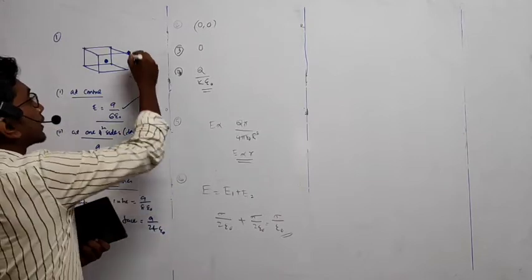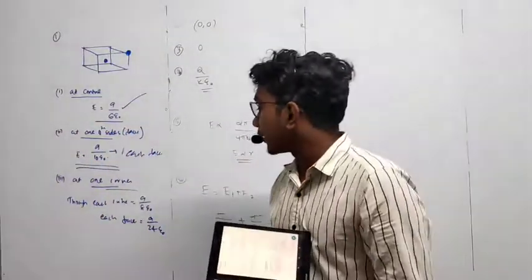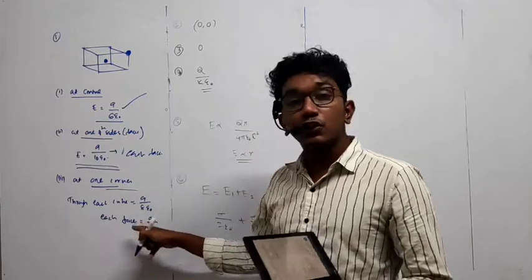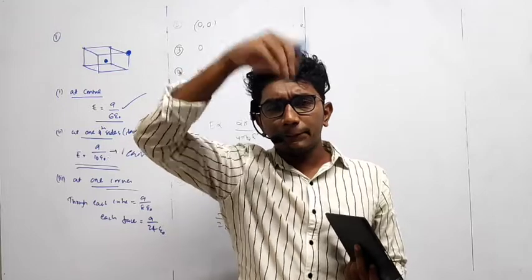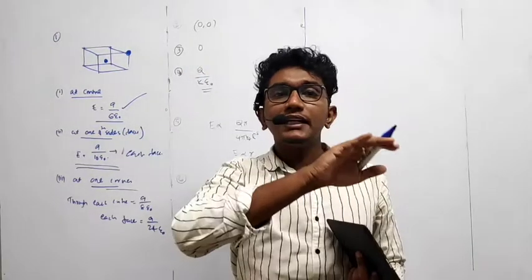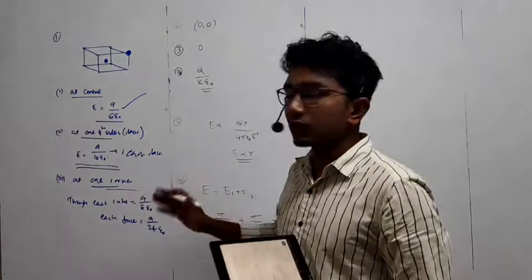At one of the corners, suppose we are placing at one of the corners, then it will be through each cube Q by 8 epsilon 0, because to complete, to make it complete Gaussian surface, you need 8 cubes, you need additional 7 cubes, total 8.